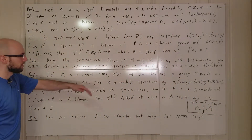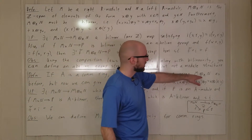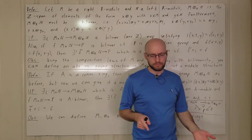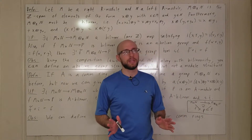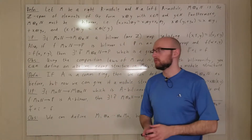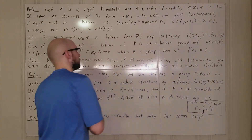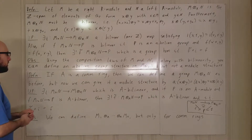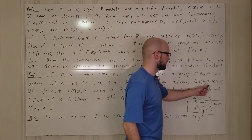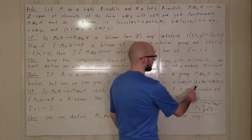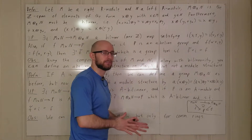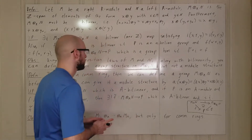If instead A denotes a commutative ring, we can say more. For modules over a commutative ring, left and right modules are really the same thing — that's not necessarily true for non-commutative rings. So in this scenario, we can give M ⊗_A N a module structure: a·(x ⊗ y) = (ax) ⊗ y = x ⊗ (ay). This works because M and N are just modules, not specifically left or right, and everything checks out.